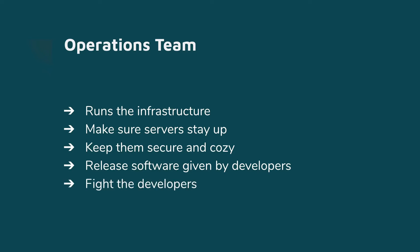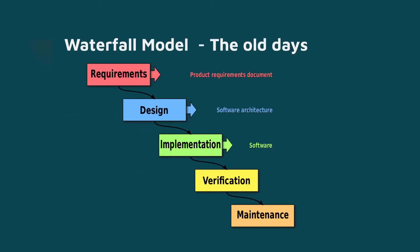So now we have two different teams but they both have the same goal — they want to get their software released to their customers. So how does this software get released? What is the procedure or model to follow? First of all, we have the waterfall model. This is the old way of doing things.